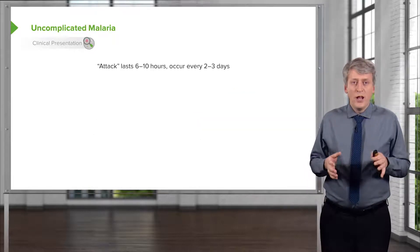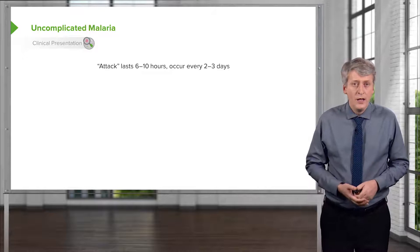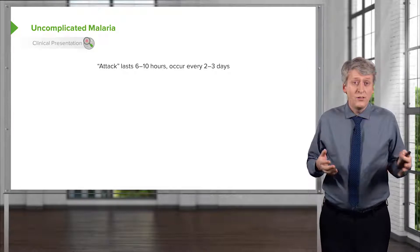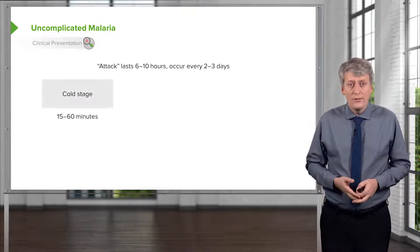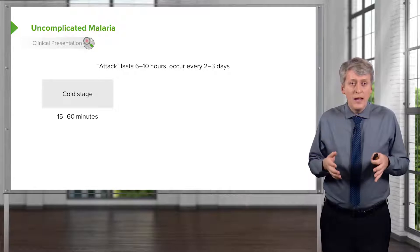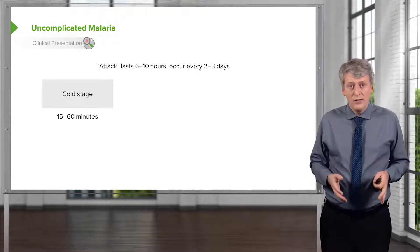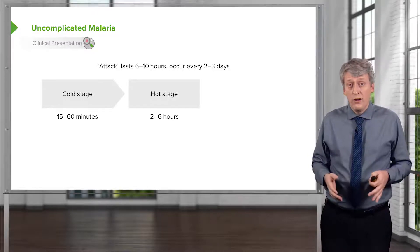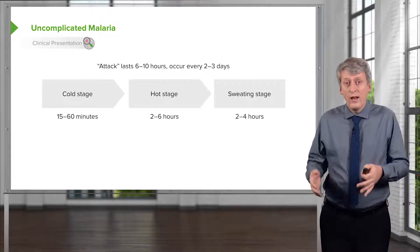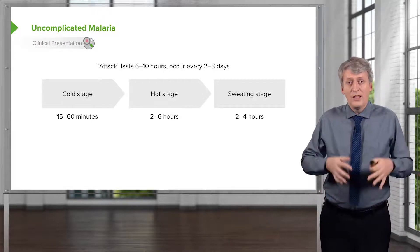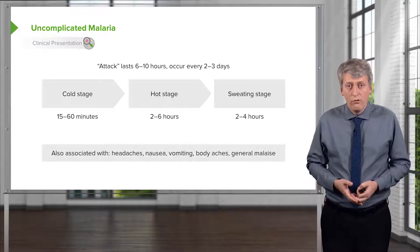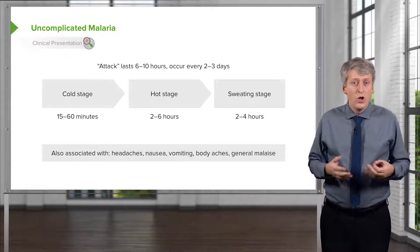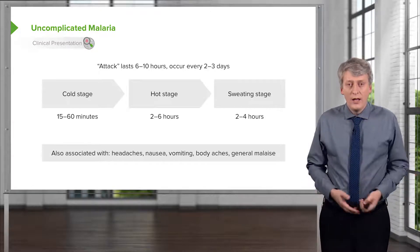The patient develops symptoms of uncomplicated malaria. This basically is an attack, a fever, which will typically last 6 to 10 hours and occur every 2 to 3 days. The stages can be named as the cold stage, which lasts about 15 to 60 minutes when the patient feels cold, followed by the hot stage when the patient is overtly febrile between 2 and 6 hours, and then the sweating stage, which is 2 to 4 hours after that. Symptoms may also include headaches, nausea, vomiting, body aches, and generalized malaise.